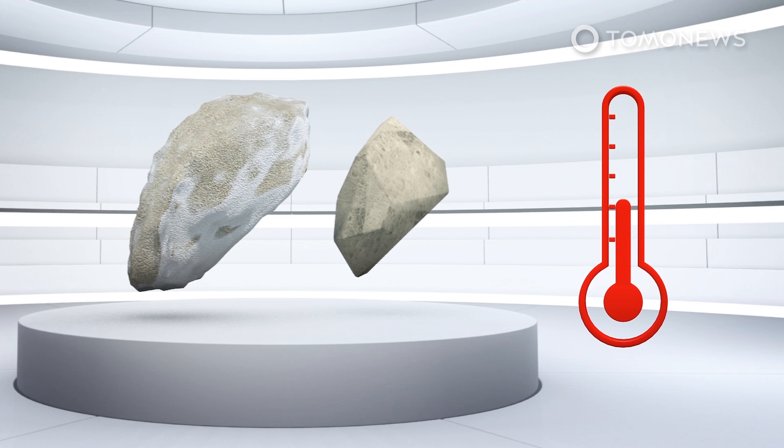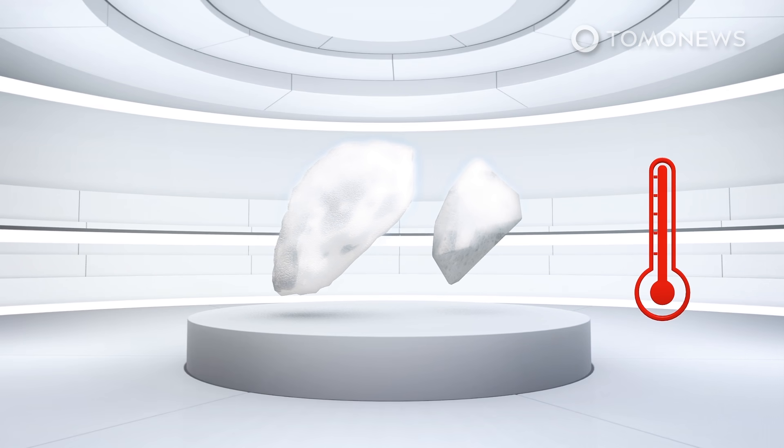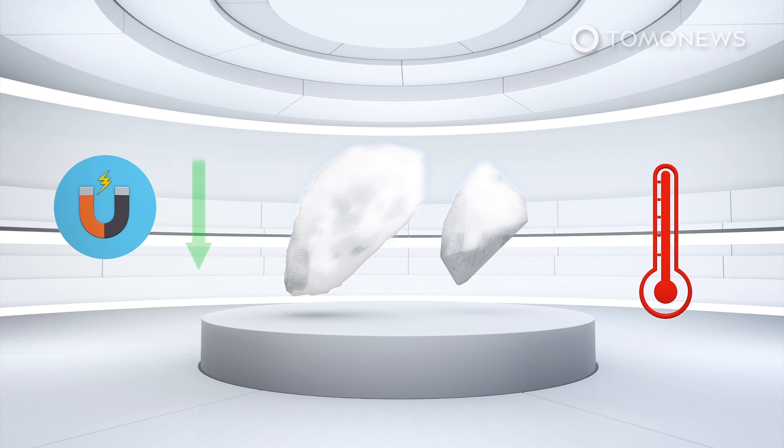As the rocks were left by a meteor impact, scientists reheated the rocks and obtained the same readings to make sure the impact's heat did not interfere with the rocks' magnetic records.